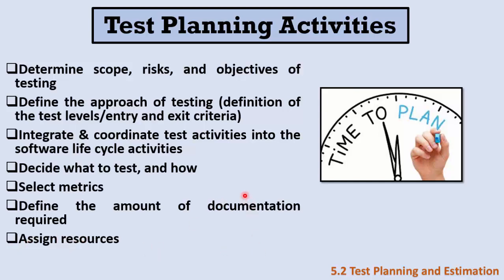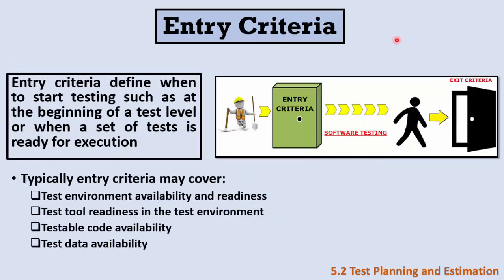We then assign the resources needed during the project. Let's talk about entry criteria. As this picture shows, entry criteria defines when to start testing — what conditions must be ready before we can begin. Examples include test environment availability and readiness, whether the test tool is ready, whether the code is available. For white box or unit testing, we need testable code; for acceptance testing (alpha or beta), we need tested data.